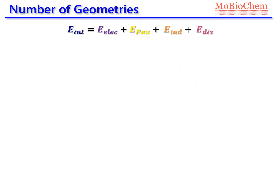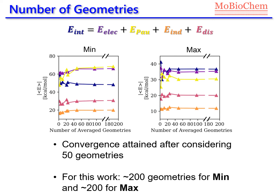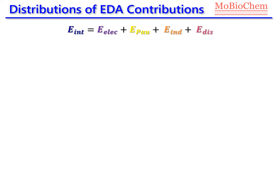For the number of geometries, we analyzed the running average of each energy term as we increased the sample size. After 50 geometries, convergence was nearly complete, but to ensure a proper statistical ensemble we decided to use 200 geometries for the minimum region and 200 geometries for the maximum region.